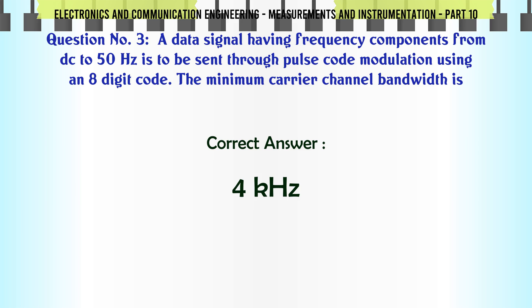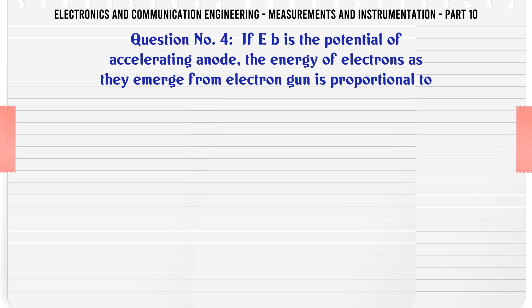If Eb is the potential of accelerating anode, the energy of electrons as they emerge from electron gun is proportional to: A) Eb, B) Eb, C) Eb^1.5, D) Eb^2. The correct answer is Eb.